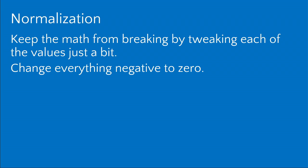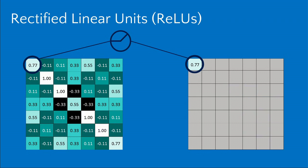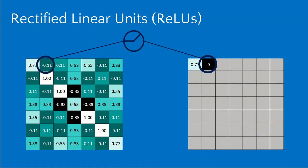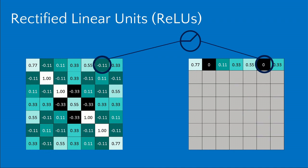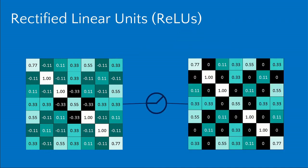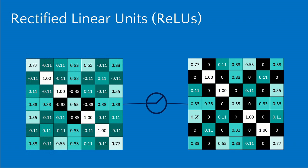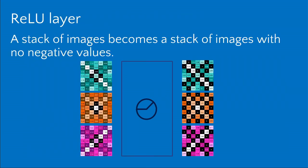The last ingredient we need is normalization. This keeps the math from breaking. By tweaking values slightly, it takes everything that's negative and changes it to zero. This keeps things from becoming unmanageably large as you progress through subsequent layers. This function is called a rectified linear unit — a fancy name for something that takes anything negative and makes it zero. So 0.77, not negative, stays untouched; but minus 0.11, being negative, gets bumped to zero.